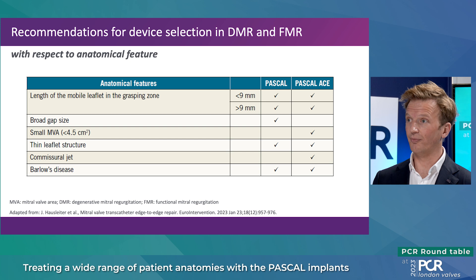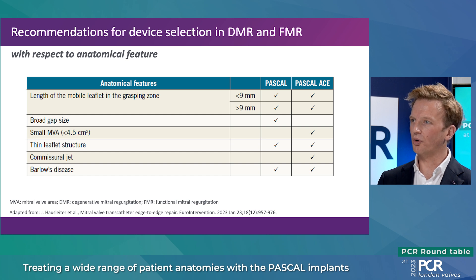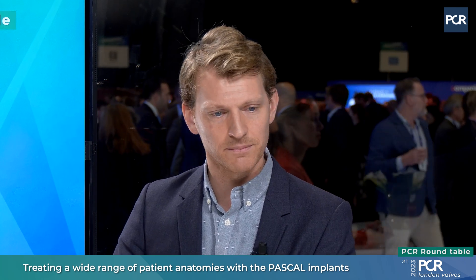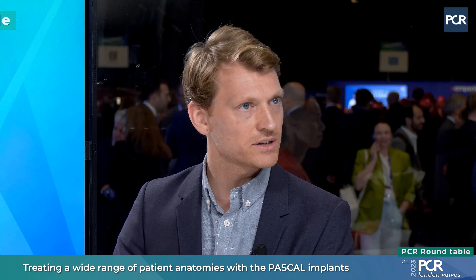We've seen Jörg's views on device selection and how to tailor it to the patient's individual anatomy. What is your perspective on that? I definitely think that both Pascal devices enable us to treat multiple mitral valve anatomies. In terms of the published data recommendation from Jörg Halschleiter, I would maybe not agree with the smaller valve area, which for me is more a P10 go-to situation, because I like to use the spacer in cases where we have maybe issues with the borderline gradient. But otherwise I definitely think we have devices to treat multiple anatomies.